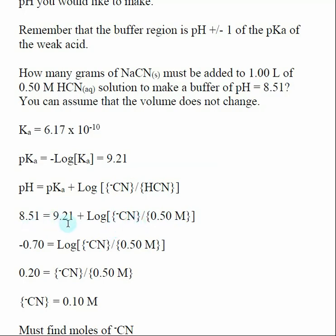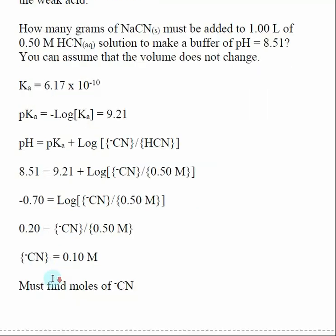So I subtract 9.21 from both sides, so -0.70 is equal to the log of my conjugate base weak acid ratio. So I take the inverse log of both sides, I get that 0.2 equals my concentration of my conjugate base divided by the concentration of the weak acid that was given here.